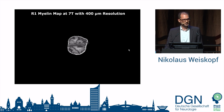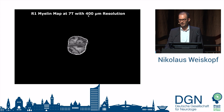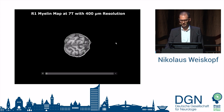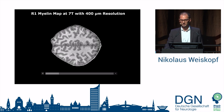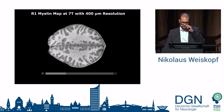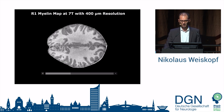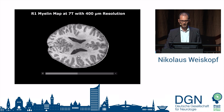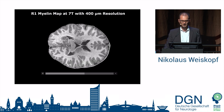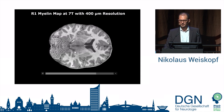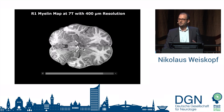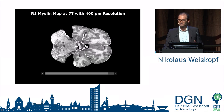We have now moved to 7T here in Leipzig. 7T offers much higher SNR than 3T, and you can zoom in even further — now we have 400 micrometre resolution R1 maps. I hope you can appreciate that the white matter is no longer a homogeneous tissue; you can actually see lots of subtle features. If you look at a particular area, you can see in the cortex a white ribbon, which is actually the Stria of Gennari, and you can start seeing layers and substructures in the cortex.